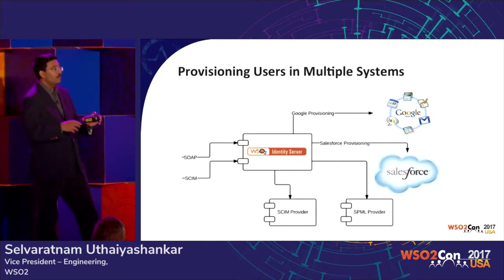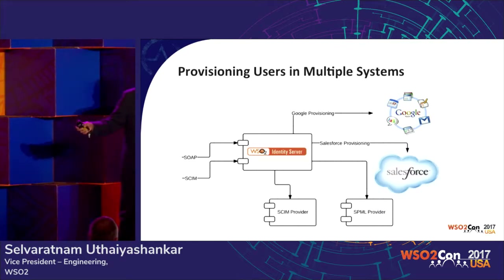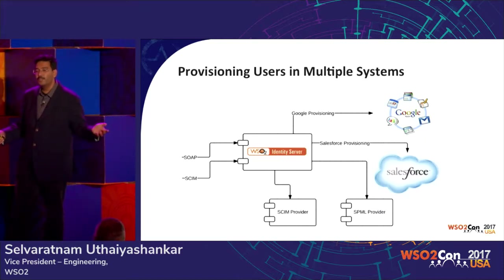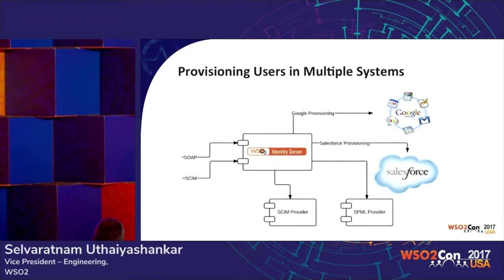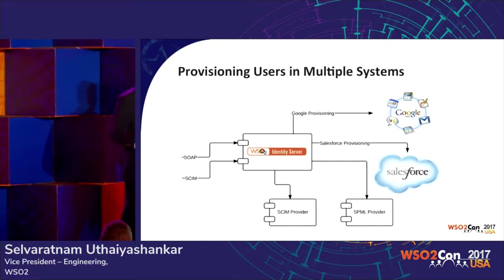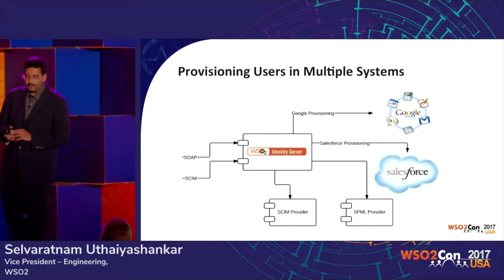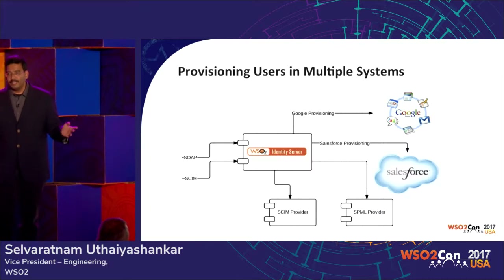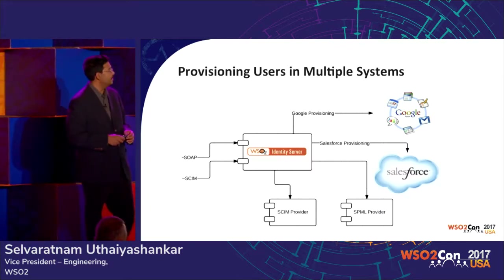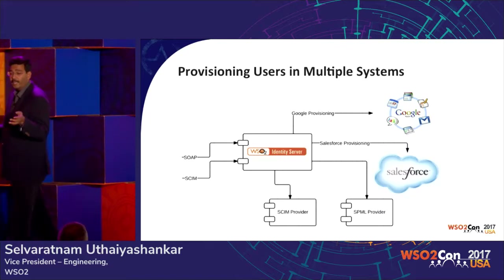Another requirement is that since the digital business integrates multiple systems, when a user is added you might want to create users in all systems automatically. For example, if your organization uses Salesforce, Gmail, and Facebook for work, when a new employee joins, users should be created automatically in all systems. And when the person leaves the company, you have to go and de-provision users from all the places, otherwise you are just opening security holes. This provisioning system is available in most identity providers.